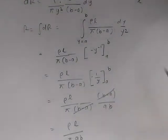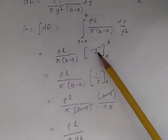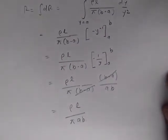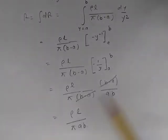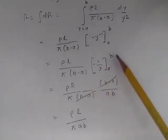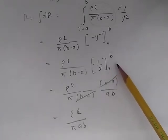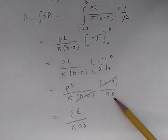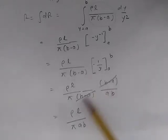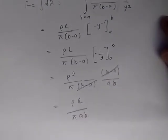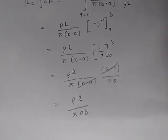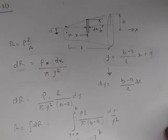The integration of y⁻² is -y⁻¹. When we substitute B and A values, we get -1/B + 1/A, which is 1/A - 1/B, or (B - A)/(AB). The (B - A) cancels, and you get the answer: ρL/(πAB).